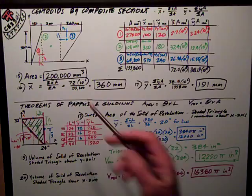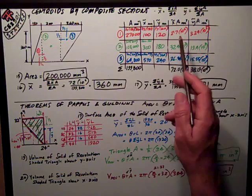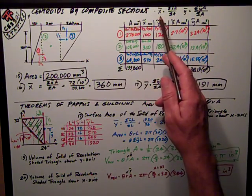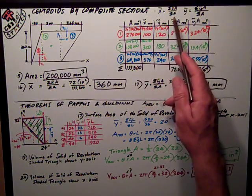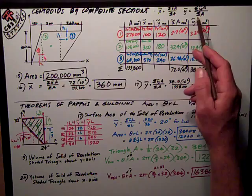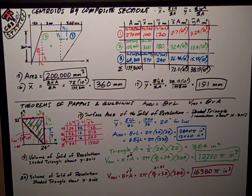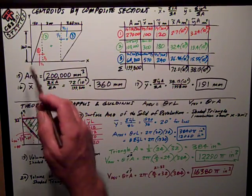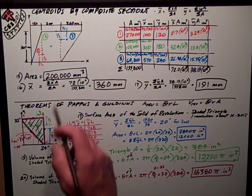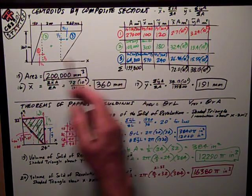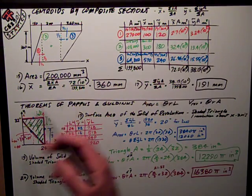Centroids by composite sections was the first part of it. We had this shape, but the first thing I would do if I got one of these problems is I would write down the formulas that are applicable. That is, x-bar equals the sum of x-tilde A over sum of A, y-bar equals the sum of y-tilde A over the sum of the areas. Here's my shape because I need to know where I'm going, that's where I want to write those formulas down and think about them.